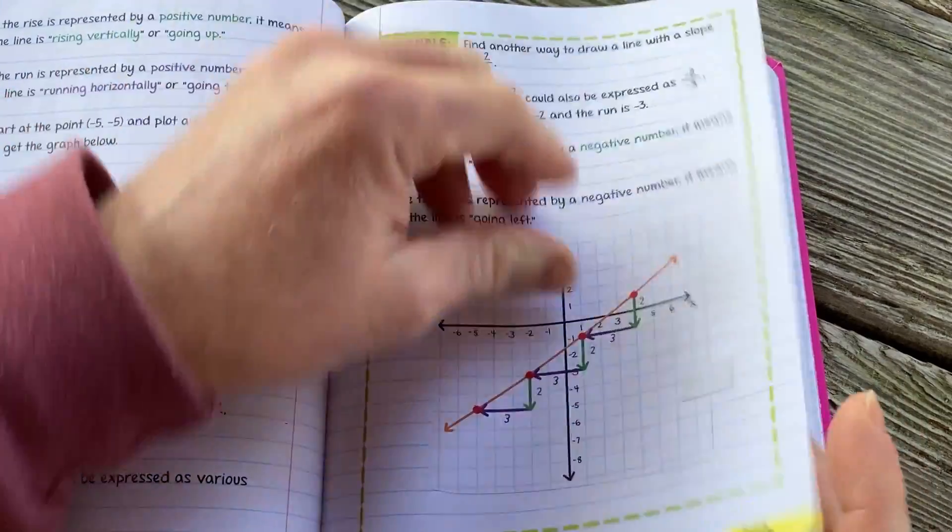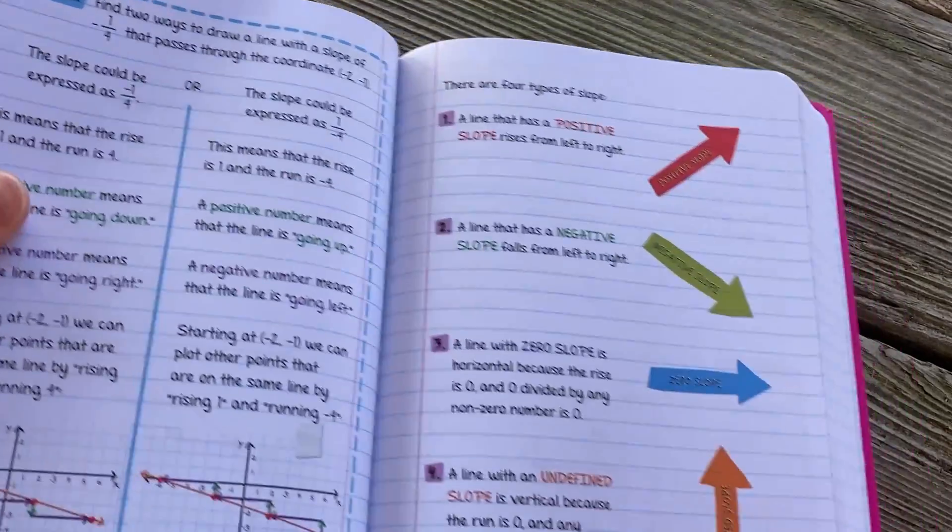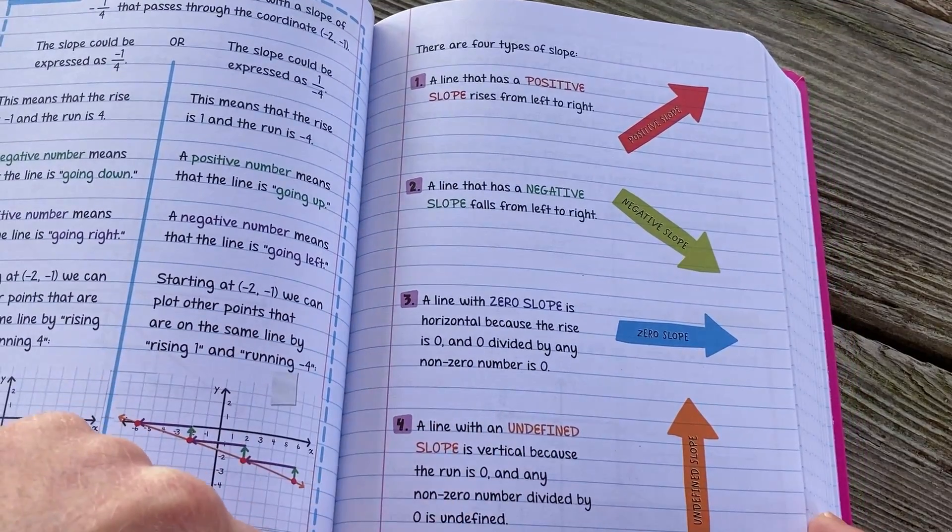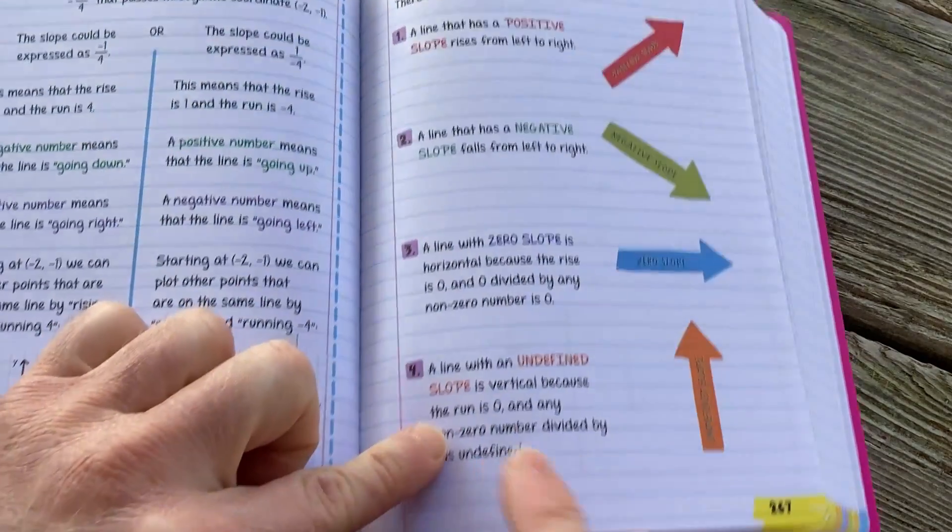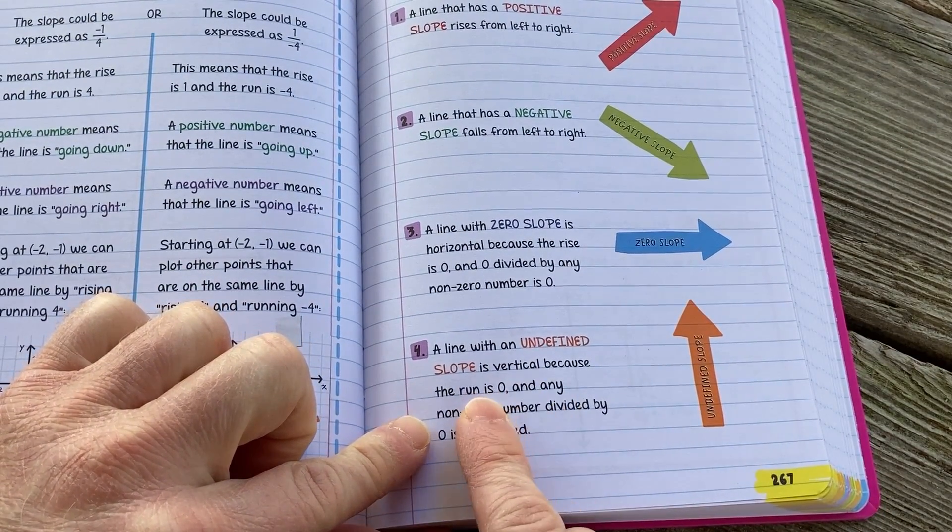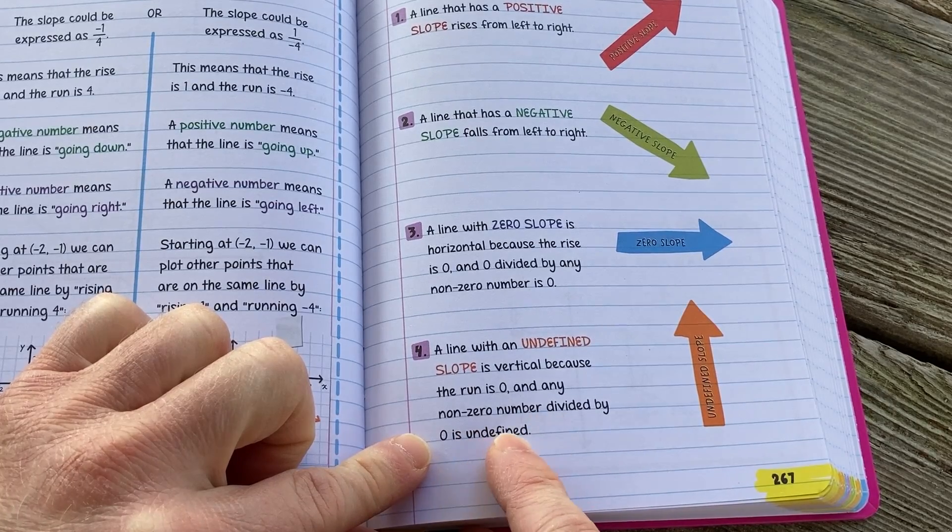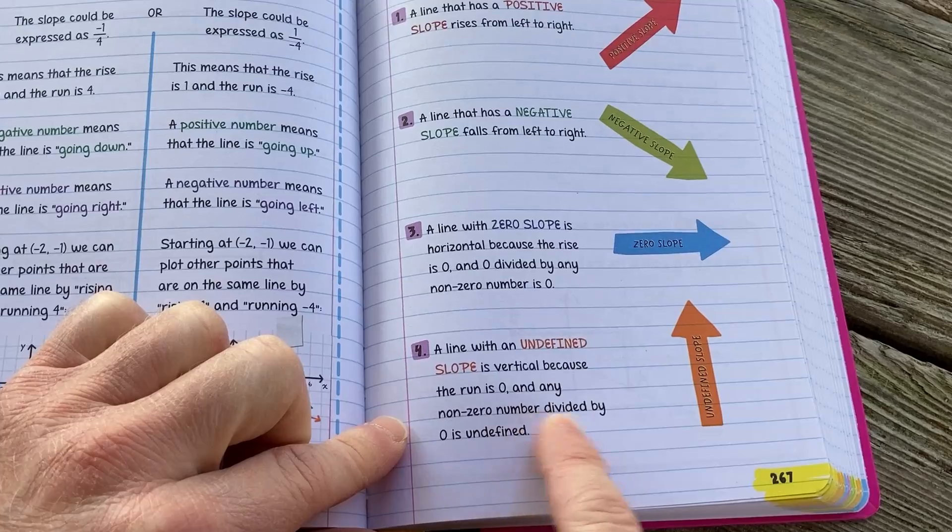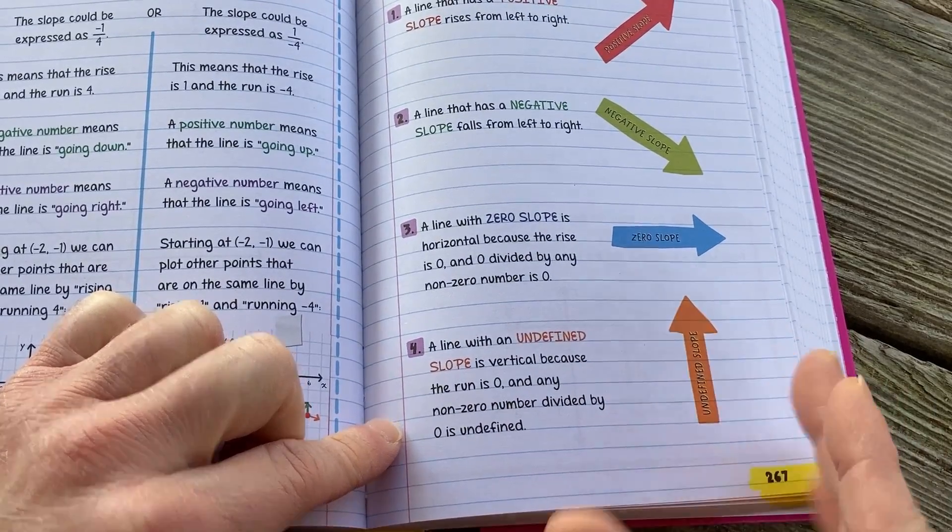Really good examples. I feel like it's very clear. There's more of it here. And they talk a little bit more about different types of slope. Undefined slope. A line with an undefined slope is vertical because the run is zero. And any non-zero number divided by zero is undefined. Vertical lines have an undefined slope because it's rise over run, but you're not going anywhere because the run is zero. So you can't divide by zero.